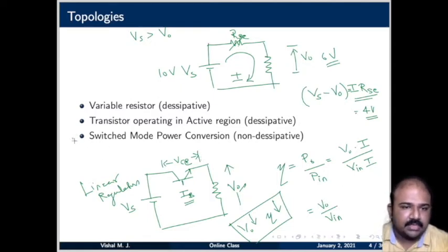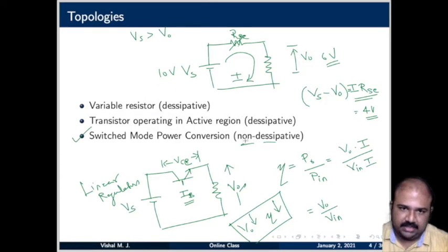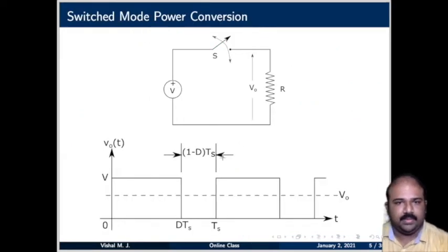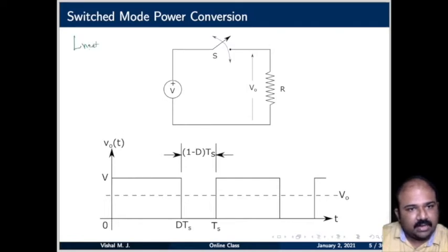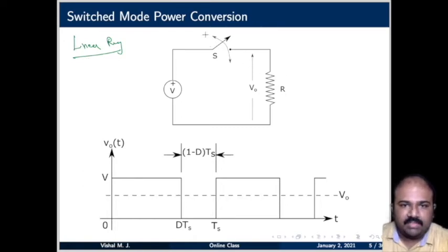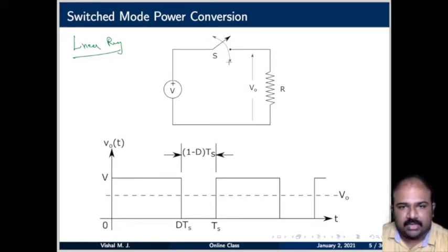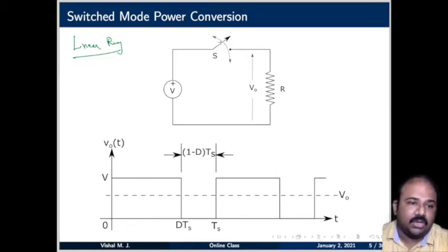Now comes switched mode power conversion, and remember — in the ideal sense, it is non-dissipative. Instead of a series dissipative element, we have a switch — a semiconductor switch — which can be turned on or turned off at our will, at a very fast pace, perhaps several thousand times per second.